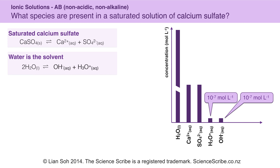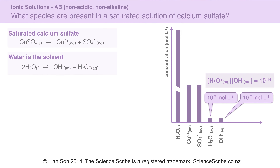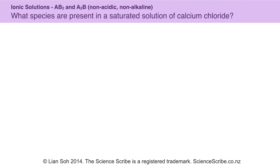I know that their concentrations are 10 to the negative 7 moles per litre based on a formula we need to know — found in NCEA Level 2, but still required in NCEA Level 3. In another example, let's look at calcium chloride this time. It's still an ionic solution that's not acidic and it's not alkaline.